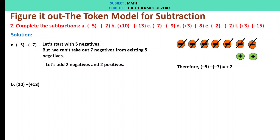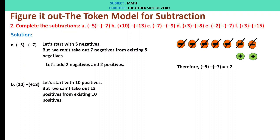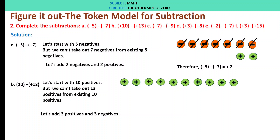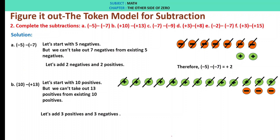B: 10 minus of plus 13. Let's start with 10 positives. But we can't take out 13 positives from existing 10 positives, because 10 is less than 13. So let's add 3 positives and 3 negatives. Upon adding, we take out 13 positives and are left with 3 negatives. Therefore, 10 minus of plus 13 is minus 3.